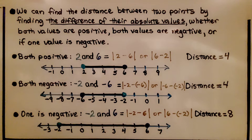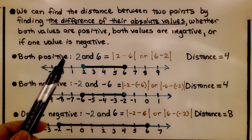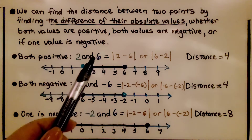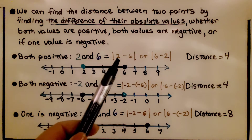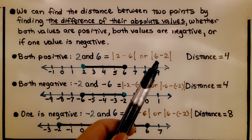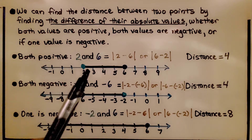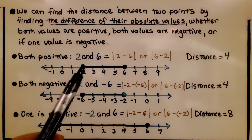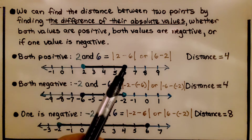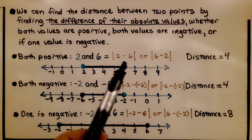We can find the distance between two points by finding the difference of their absolute values, whether both values are positive, both values are negative, or if one value is negative. If both are positive — we have positive two and positive six — we can do the absolute value of two minus six, or the absolute value of six minus two. We have a point at two and a point at six. The distance is four.